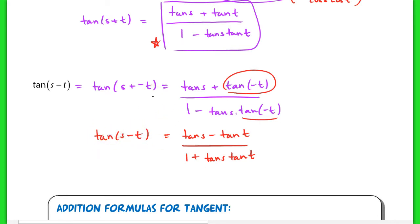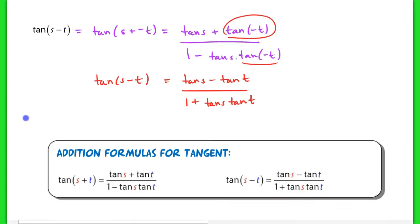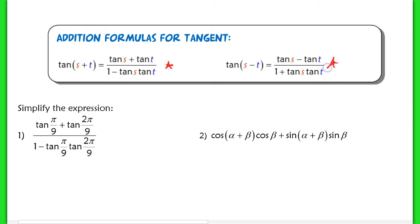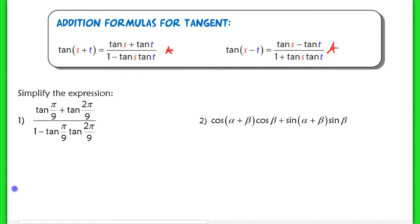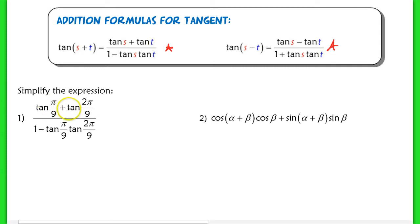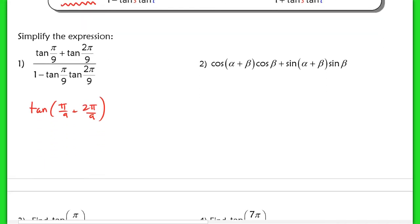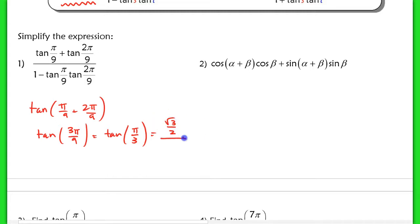This is exactly what we derived for both our tangent formulas. Now let's use them in problems 1 and 2 — simplify the expression. In problem 1, I see the tangent of pi over 9 plus tangent of 2 pi over 9, all over 1 minus tangent of pi over 9 times tangent of 2 pi over 9. Recognizing this as the tangent addition formula, we have tangent of pi over 9 plus 2 pi over 9, which is tangent of 3 pi over 9, or tangent of pi over 3. The tangent of pi over 3 equals sine of pi over 3 over cosine of pi over 3 — that's root 3 over 2 divided by 1 half — which gives root 3.